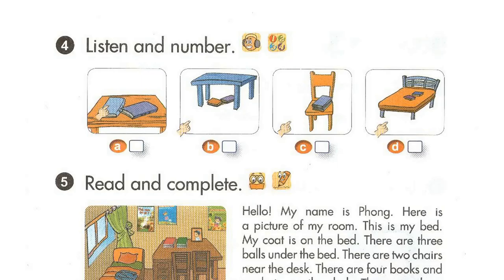Page 21, Lesson 2, Activity 4: Listen and number. 1. Where are my books? They're there on the chair. 2. Where are my books? They're here on the desk. 3. Where are my books? They're there on the bed. 4. Where are my books? They're there under the desk.